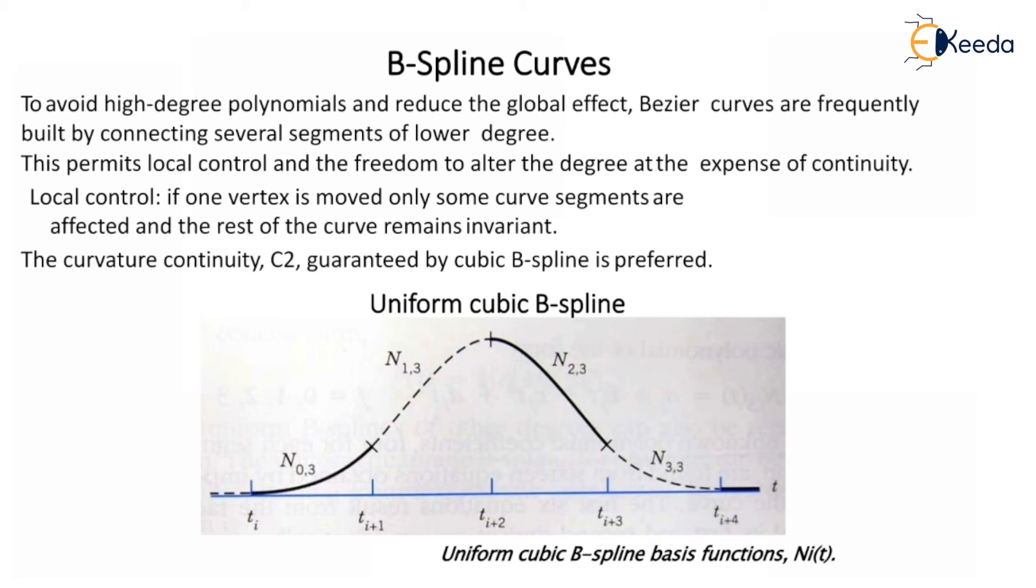The curvature continuity C2 guaranteed by cubic B-spline is preferred as shown in the figure. It is a uniform cubic B-spline basis function Ni(t), where ti, ti+1, we have to plot one diagram and from that uniform cubic B-spline is plotted, that is ti+2, ti+3, ti+4. And there is a t function on x-axis and the curvature is given as the sum of the segments as shown in the figure.